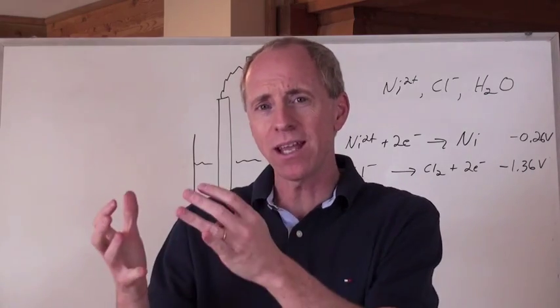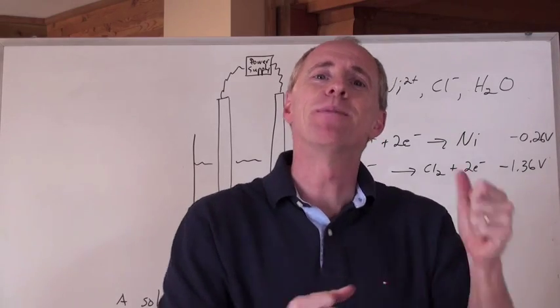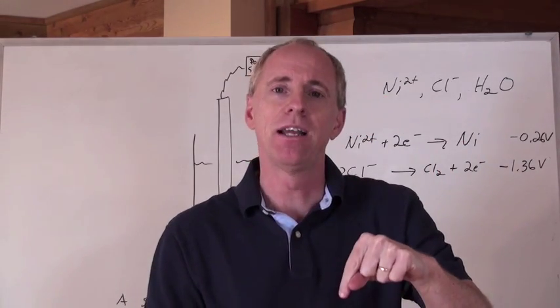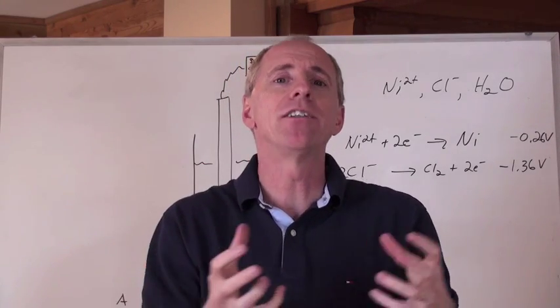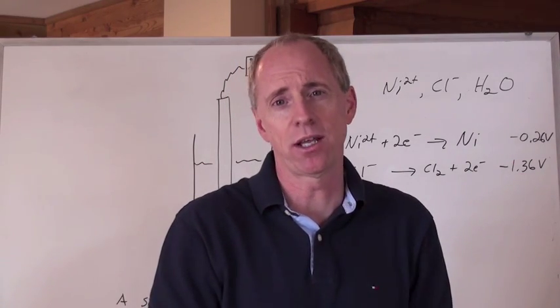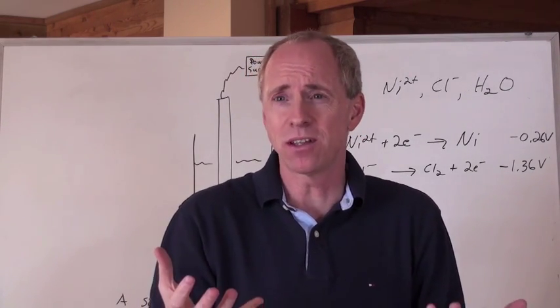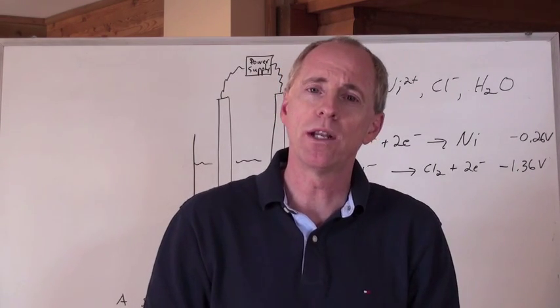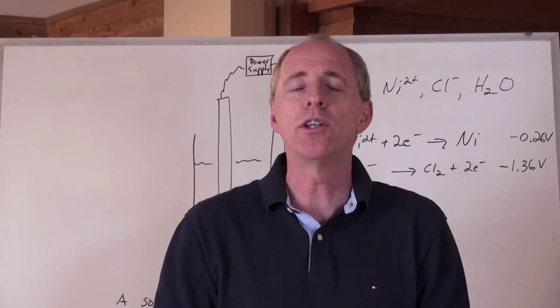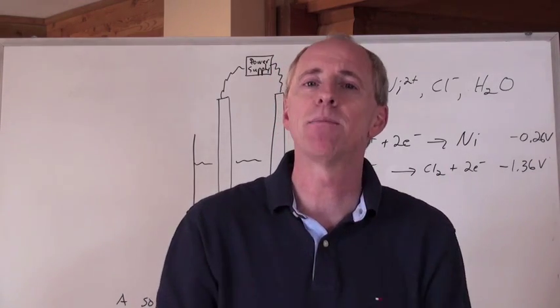Remember, voltaic or galvanic cells will take chemical energy and turn it into electrical energy. But now an electrolytic cell is going to take electrical potential energy and turn it into chemical potential energy. And by the way, that means then that the reaction is non-spontaneous. So it would have a negative voltage when you do the calculation. What you're doing is you're zapping a solution with a power supply and you're getting chemicals out of it.